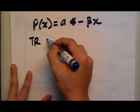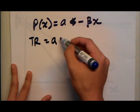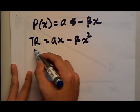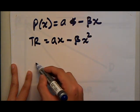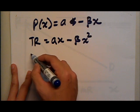To get the total revenue, we multiply the demand equation by quantity, which is x, so we will get TR = ax minus bx squared. You differentiate total revenue with respect to x, you will get marginal revenue.